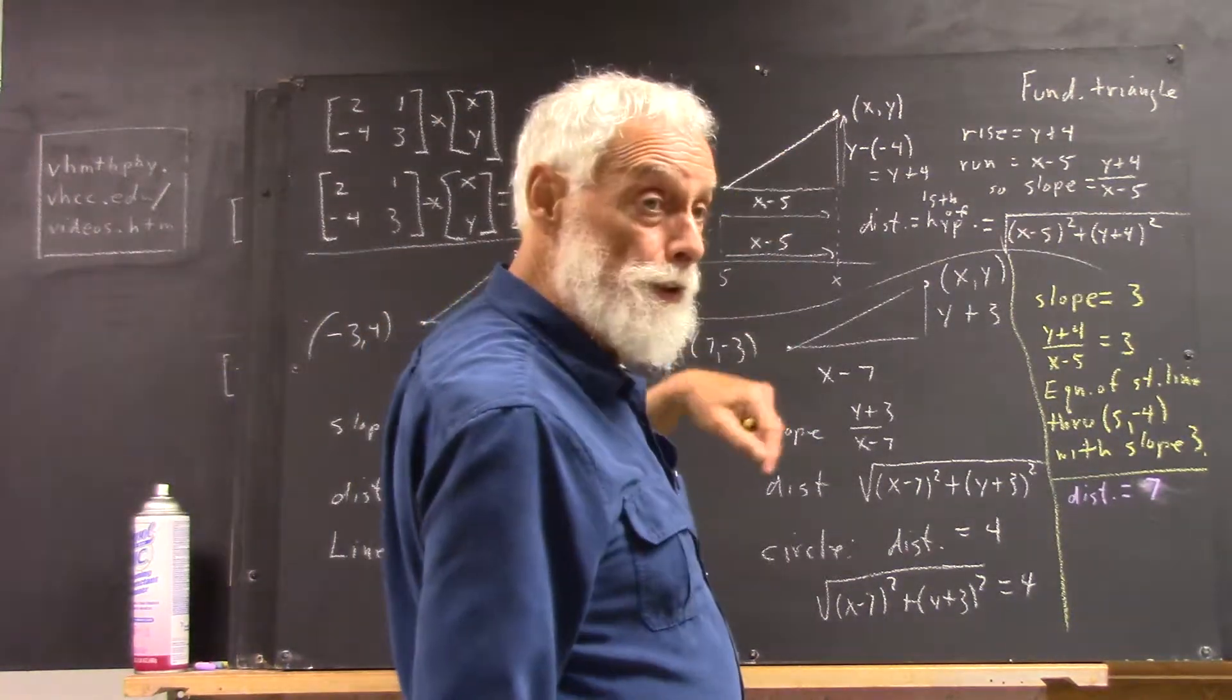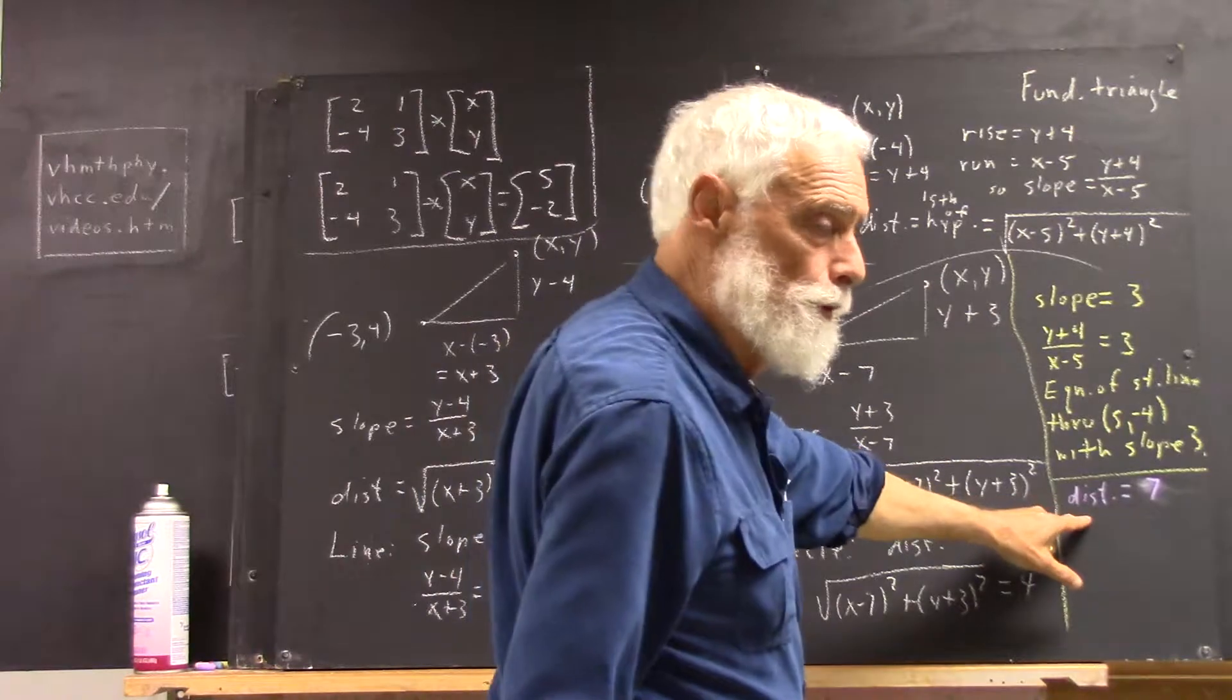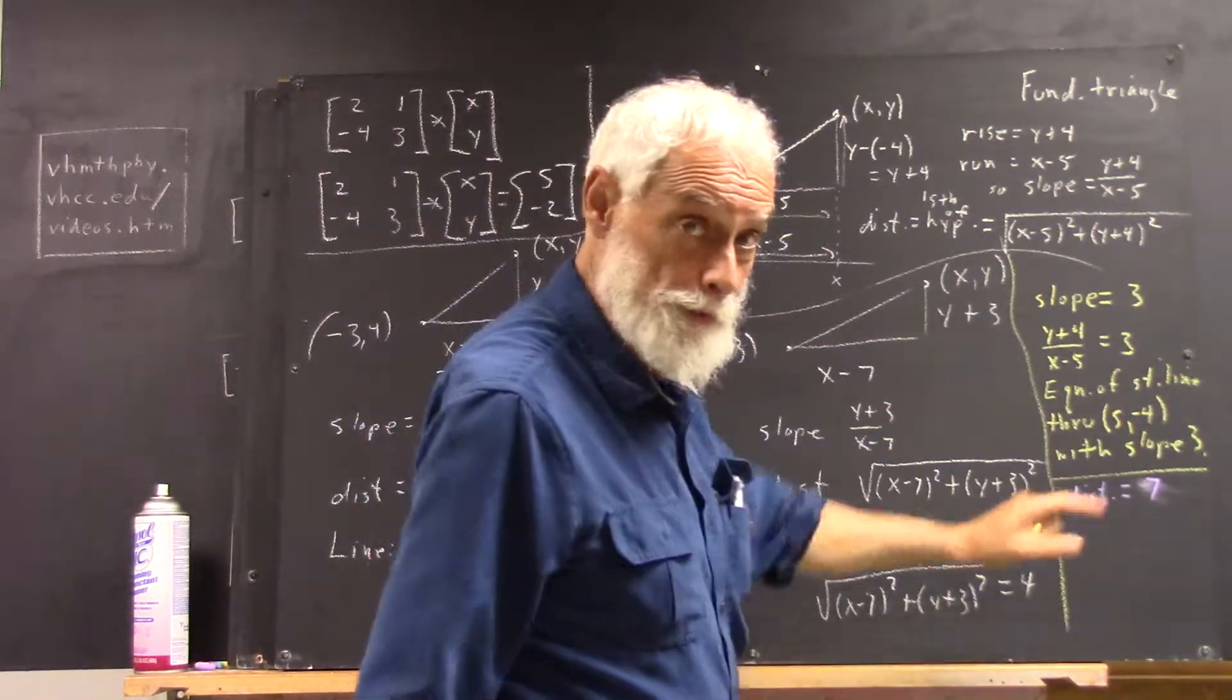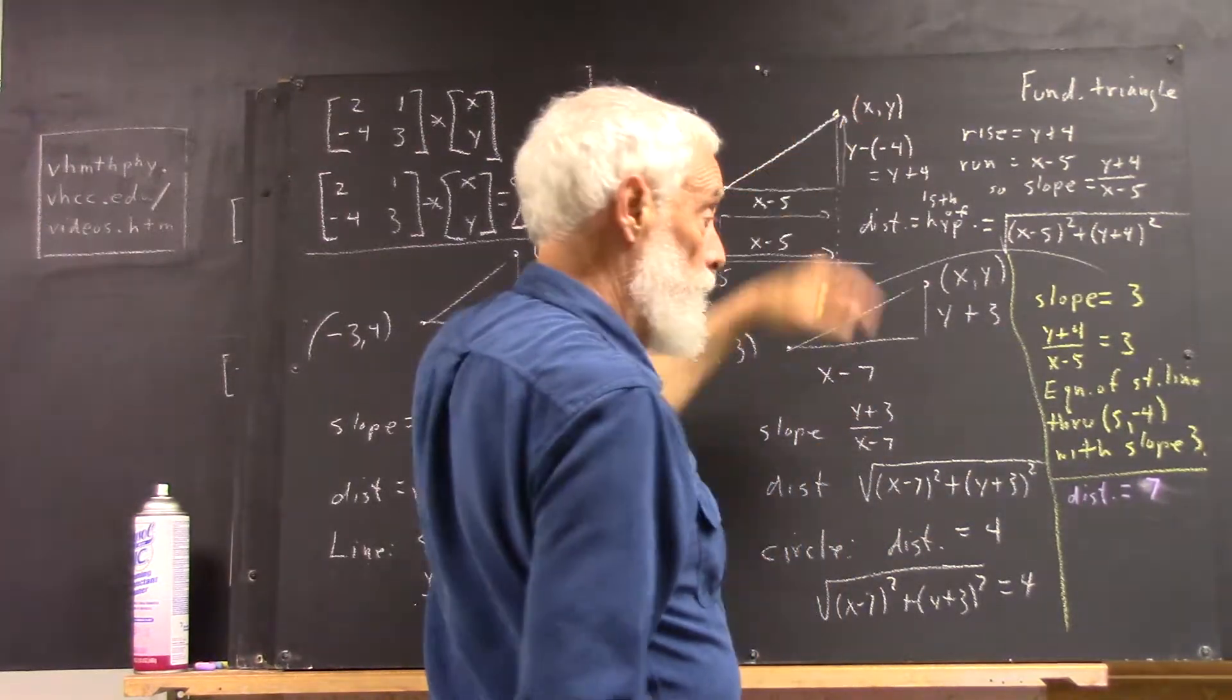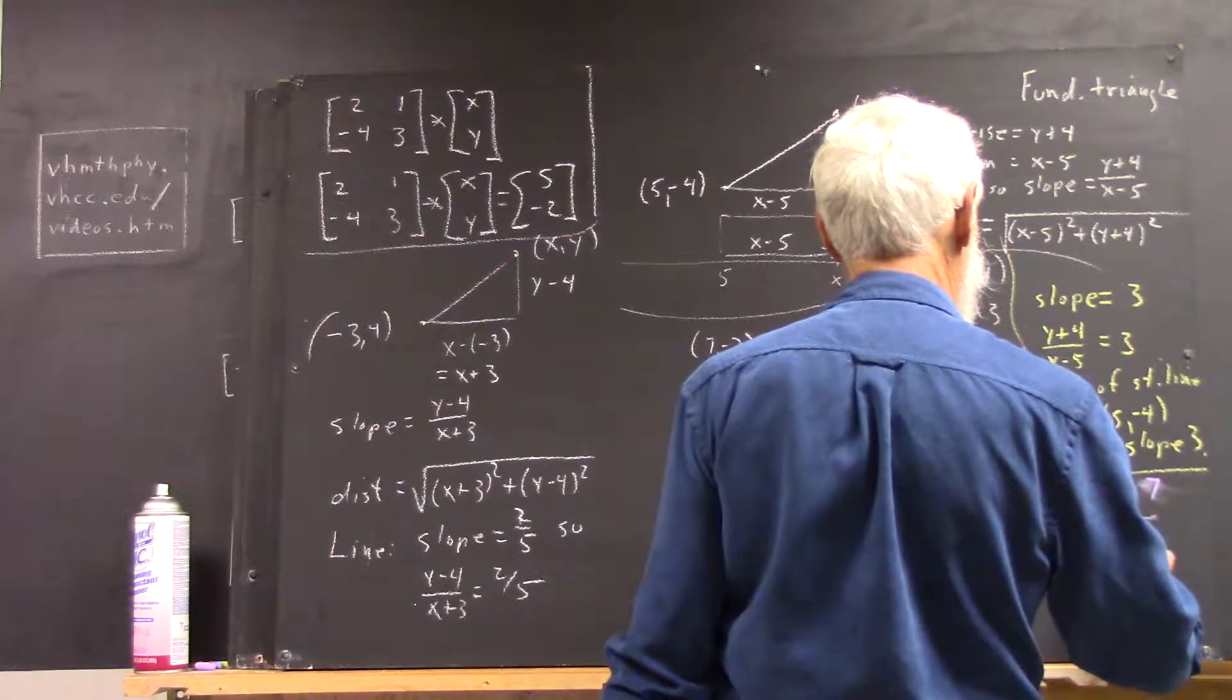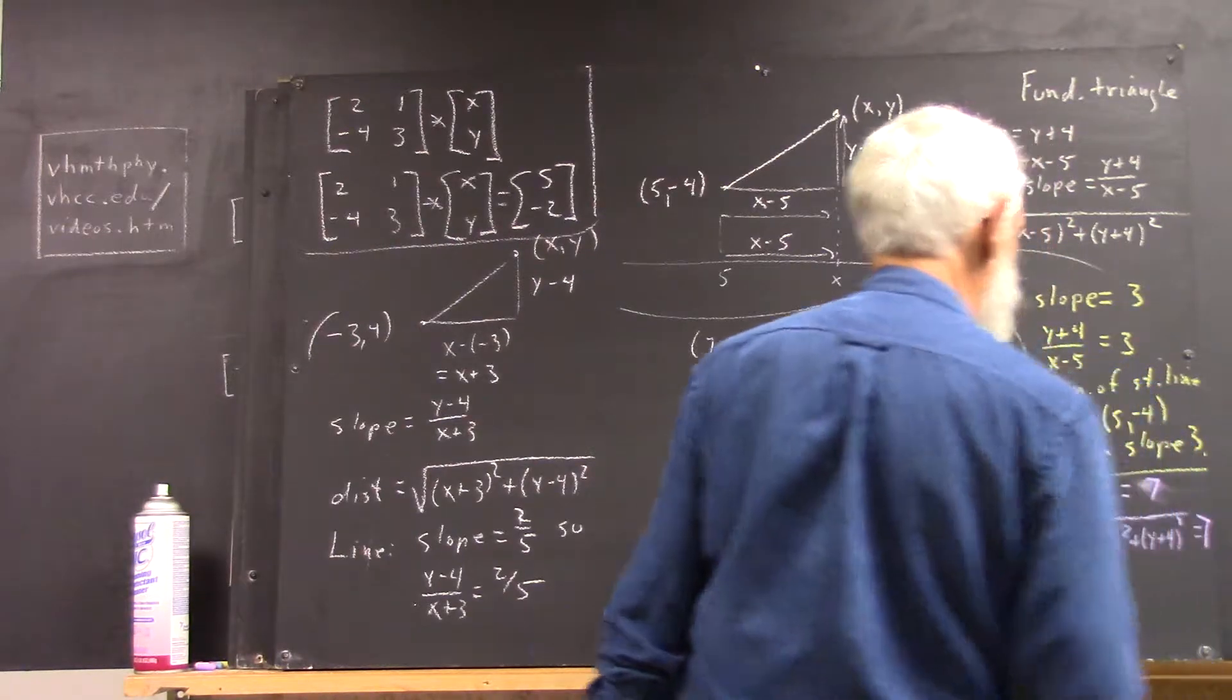Well, again, in terms of this, the only distance that we've calculated is the distance between the points, right? The distance, we could say it more specifically. The distance between 5, negative 4, and x, y is 7. Distance equals 7. That's the distance between these two points. Well, what's the distance between the points? It's this.